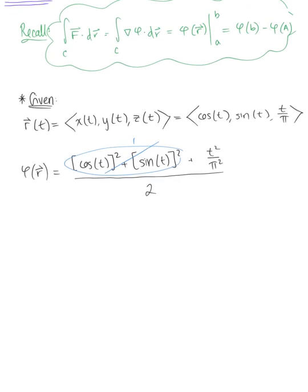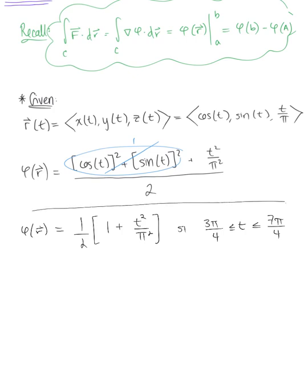And we are left with the parameterization. Actually I'm going to pull that one half out in front, so we have one half multiplied by 1 plus t² over π². And again this is such that we have our end points here for t that we just plug right in. We have that t is greater than or equal to 3π over 4, less than or equal to 7π over 4. So this is the parameterization of our potential function, and we're ready now to go ahead and apply the fundamental theorem.